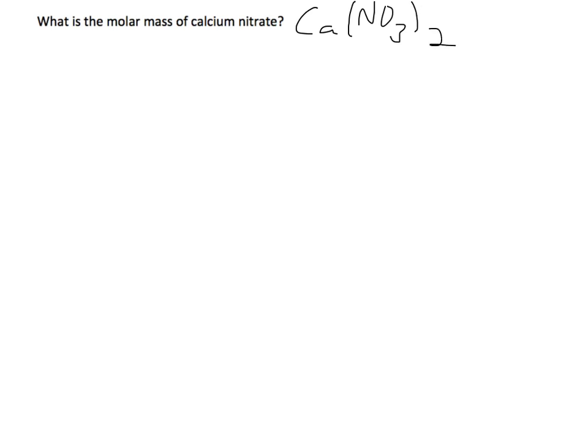So once again, we can calculate up that formula weight, so we had calcium, we have a nitrogen, we have oxygen, we have 2 nitrogen, 6 oxygen.